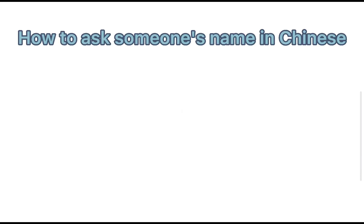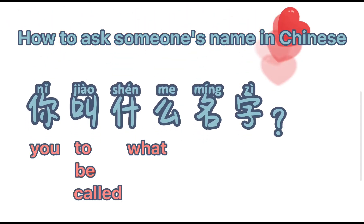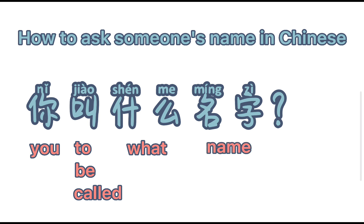How to ask someone's name in Chinese: 你叫什么名字? Let's break it down: 你 means 'you', 叫 means 'to be called', 什么 means 'what', and 名字 means 'name'.